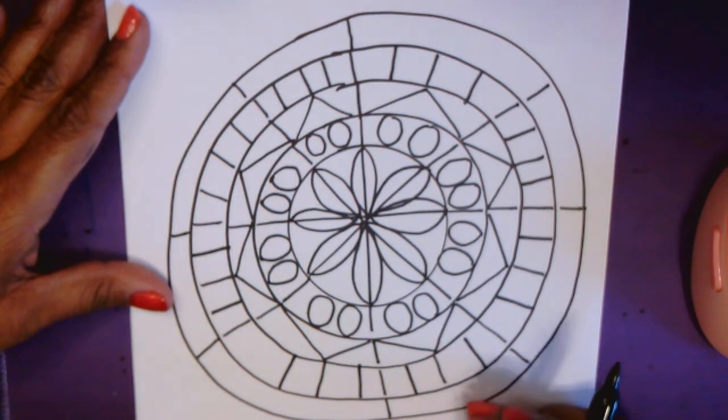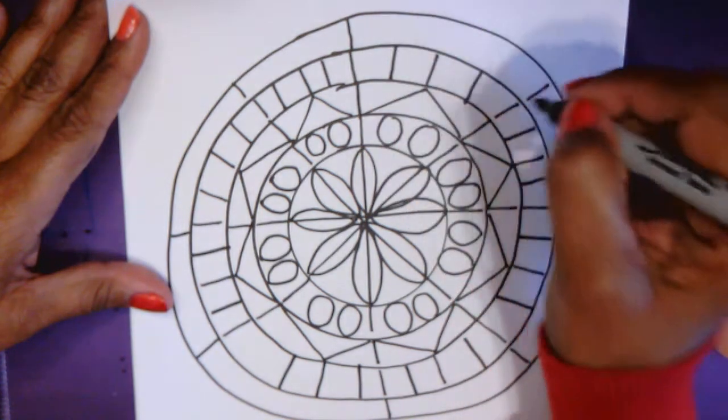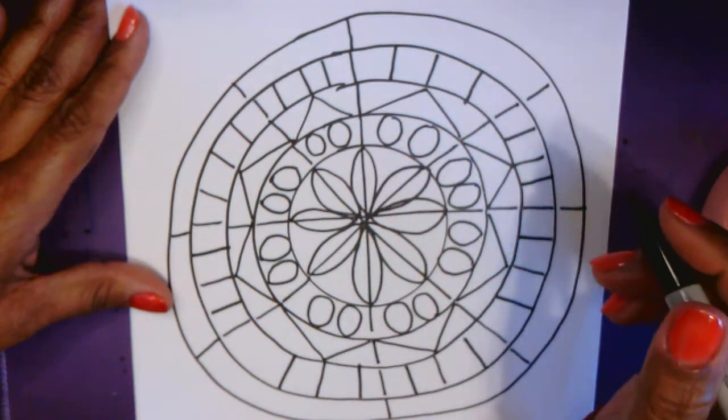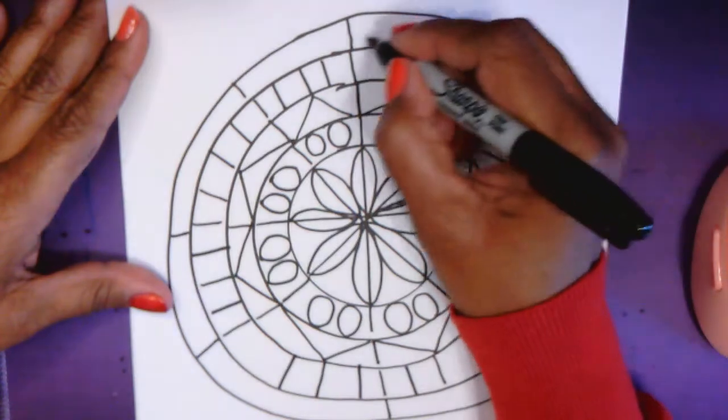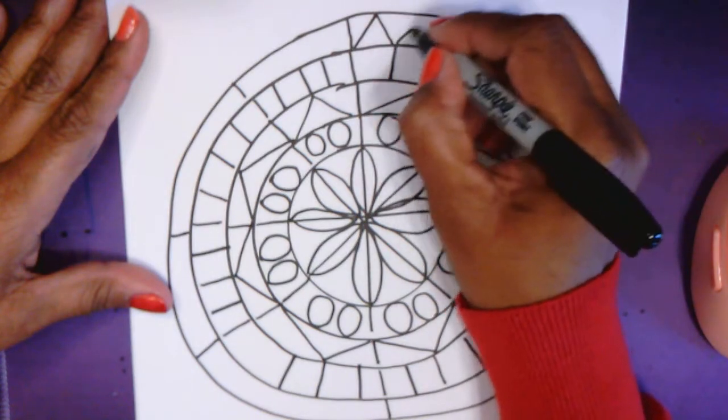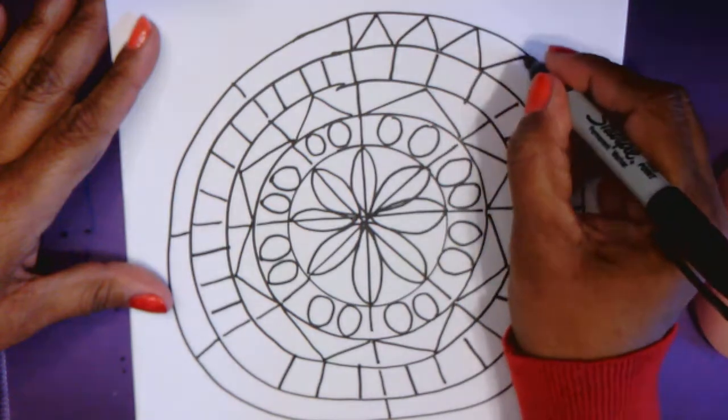You can remember where they are. Let's see. What can we put in this one? I think I'm going to do circles again. Let's see. How many do you think we could fit in here? Let's see. Maybe not circles. Maybe more triangles.